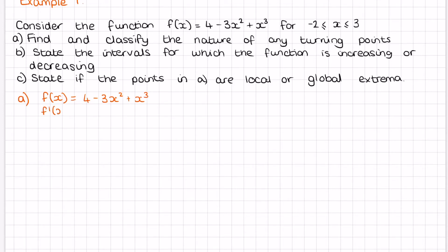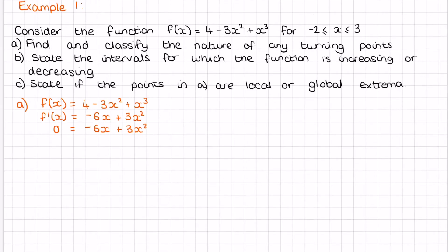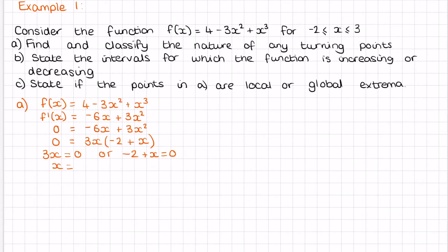The first thing we need to do is find the derivative of our function, f(x) = 4 − 3x² + x³, which gives us f'(x) = −6x + 3x². Next, we make that equal to zero to find the stationary points. Factorising by pulling out the common factor of 3x gives us 3x(−2 + x) = 0. So either 3x = 0 or −2 + x = 0, giving us x = 0 or x = 2. Those are our two stationary points.